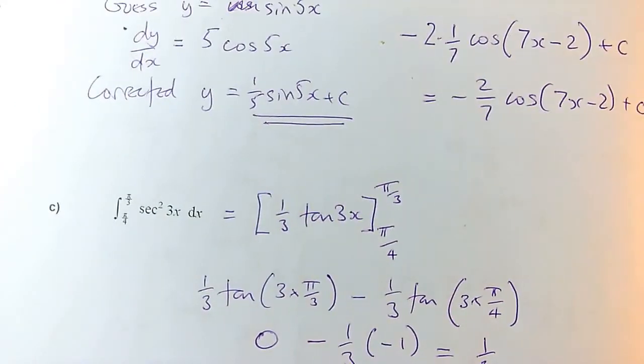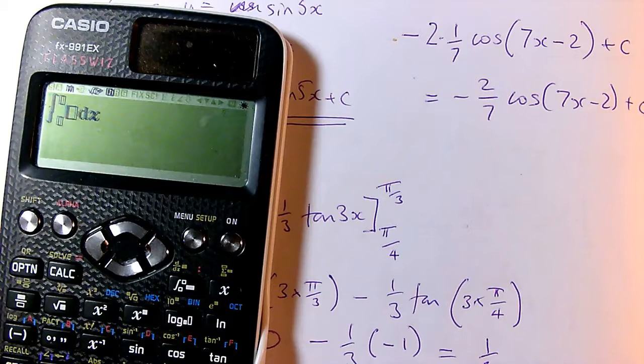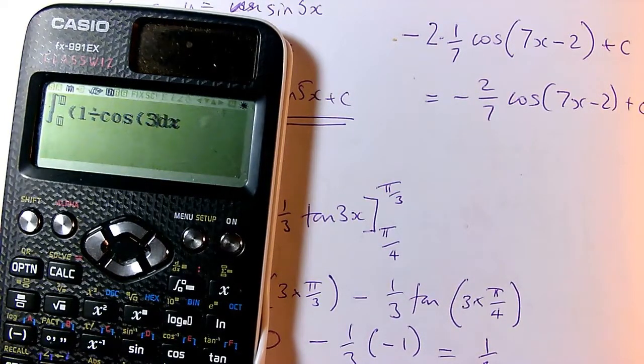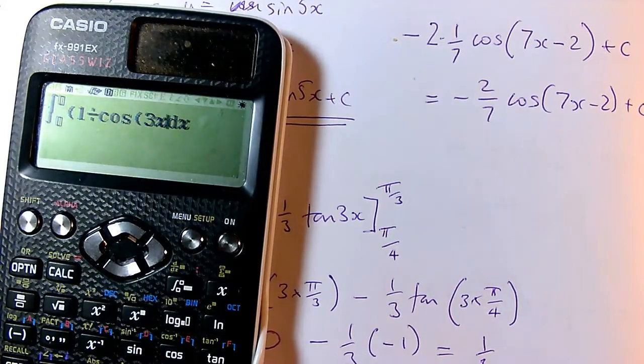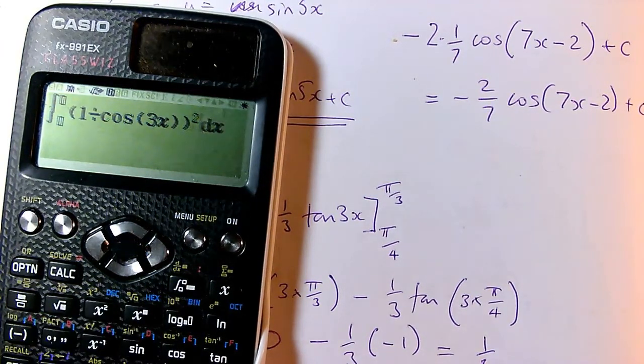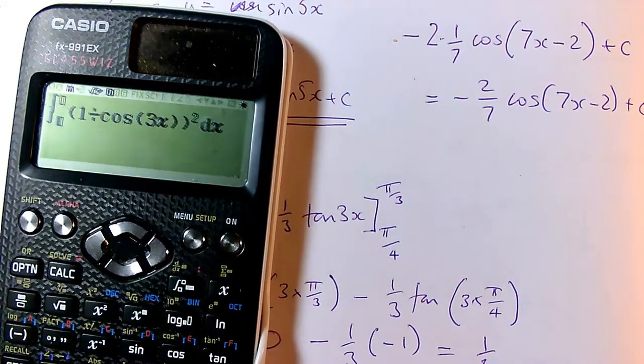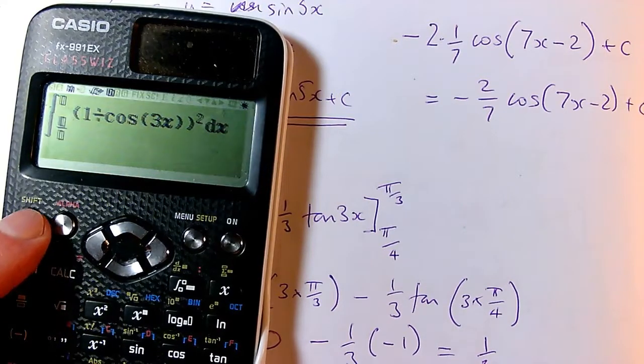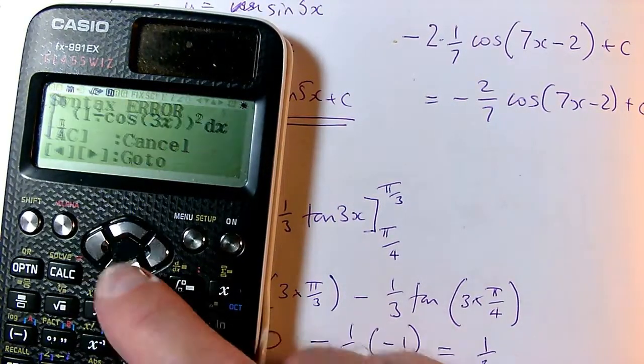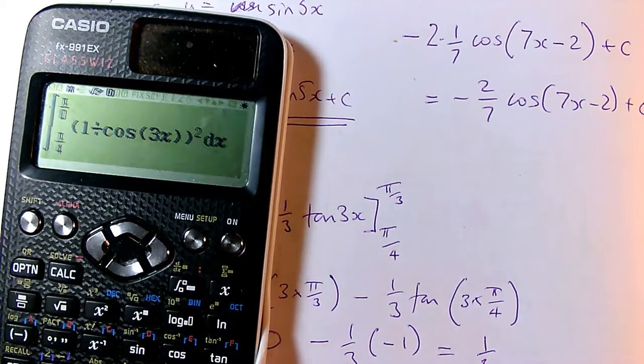And remember of course that for any definite integral, which is an integral with limits, we can just use our built in integration button here. How am I going to enter sec squared 3x? Well, sec of x is 1 divided by cos of x. So I need cos of 3x. So 1 divided by cos of x, 3x in a bracket, that's sec x. So I need to do that squared. So that's my sec squared of 3x. I haven't put my limits in. And my limits were pi by 4 on the bottom. So this is pi over 4 on the bottom. And my top limit is pi over 3. So pi on the top, 3. And now it should accept that.